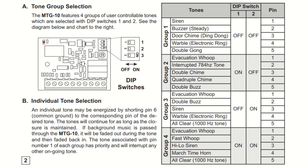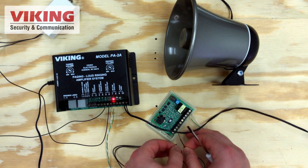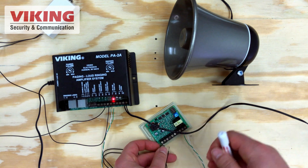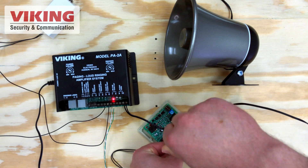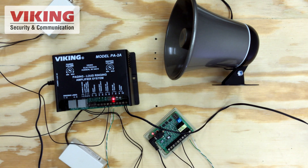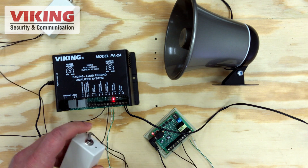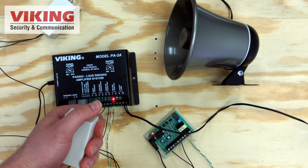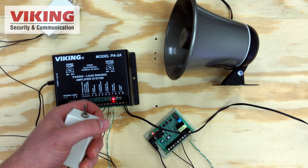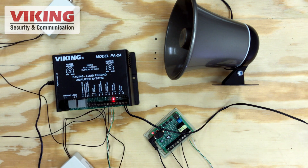Use DIP switches one and two on the MTG-10 to select from your different banks of tones, and then wire the normally open contact between the tone select pin one through five and pin six, which is common. A contact closure across these pins will produce an audio tone. This tone remains active for the duration of the contact closure.